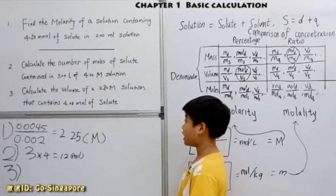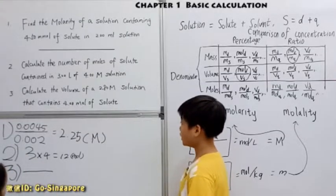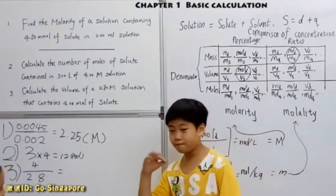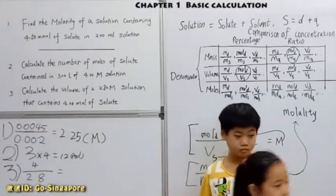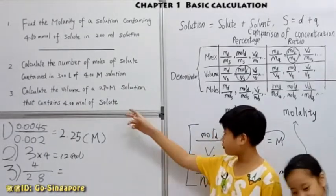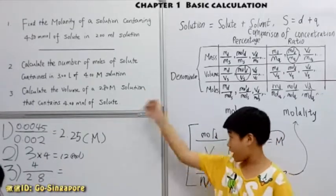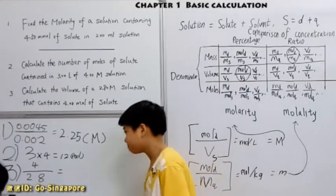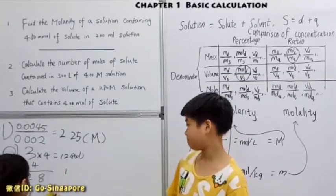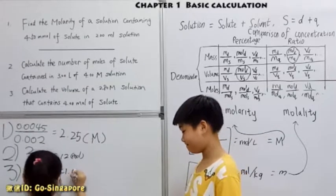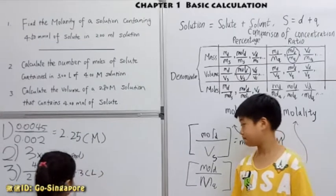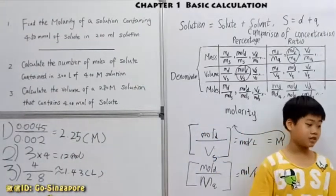So for number 3, you need to calculate the volume of a 2.8M solution that contains 4 moles of solute. So for this time, remember, the M is the mole over volume. So that is the volume. So for this, what will we need? The moles over this M. So that will be the volume. And your unit? The volume unit we always use liters. So this is actually for these 3 questions, it's just this simple, right? Yes.